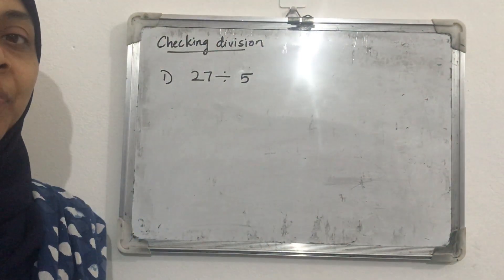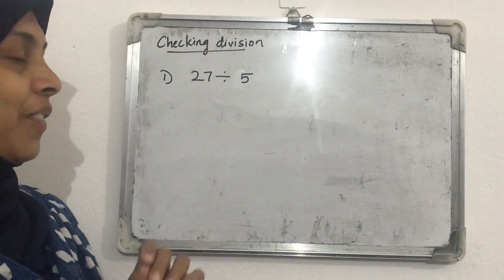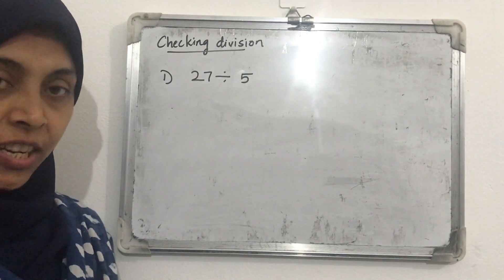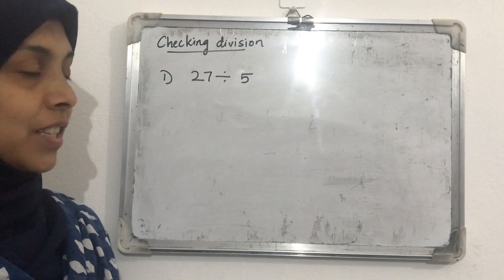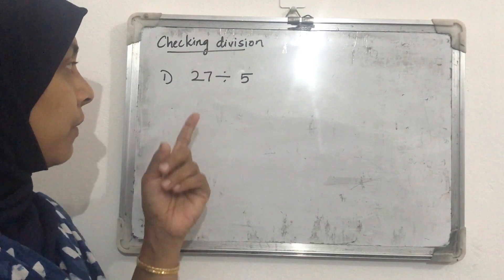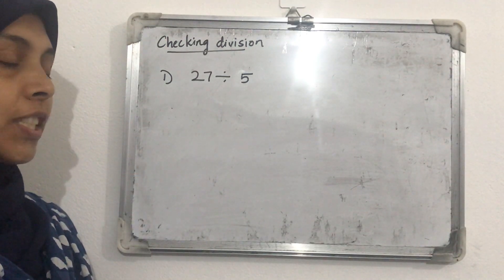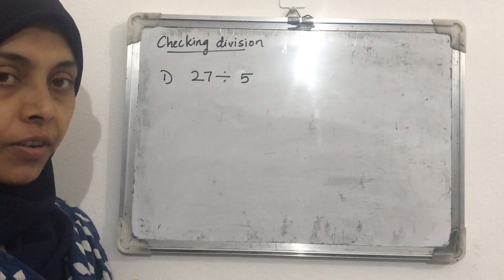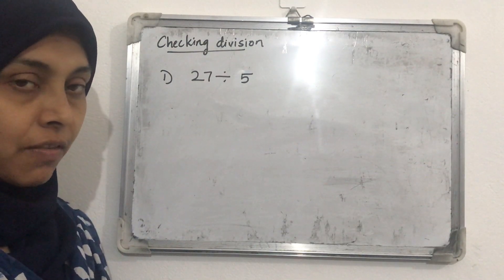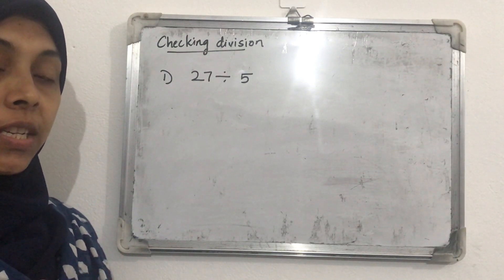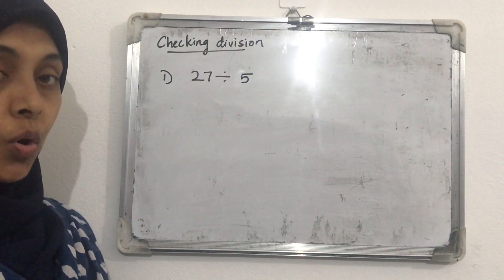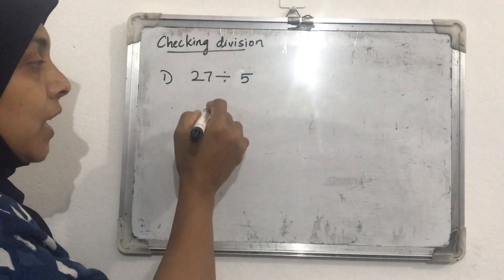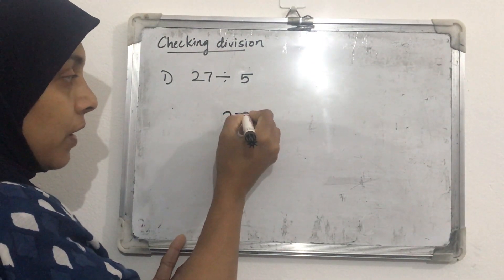Good morning, everyone. Today we will discuss how we check if our division is correct or not. When we divide 27 by 5, we get an answer, and we want to check whether it is correct or not. Let's see how we can find that out.